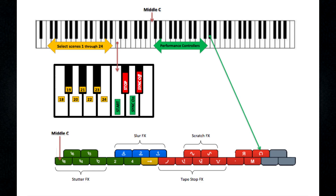Two of the most important keys are C and C-sharp below middle C. These turn Loop Mash on and off. When you look at the performance controllers, the first green button with the 1/8th on it is middle C, and you can work up from there chromatically. The bottom-most octaves on your keyboard are used for changing scenes. So essentially, you have scene control under your left hand and performance controllers under your right hand.